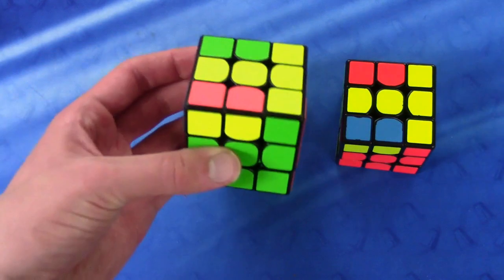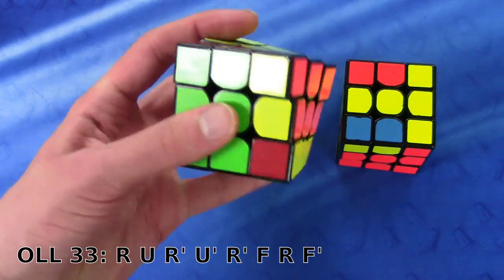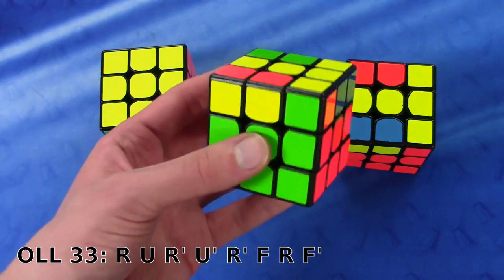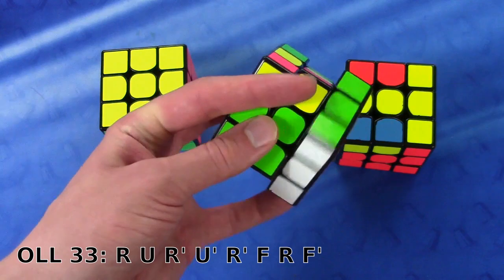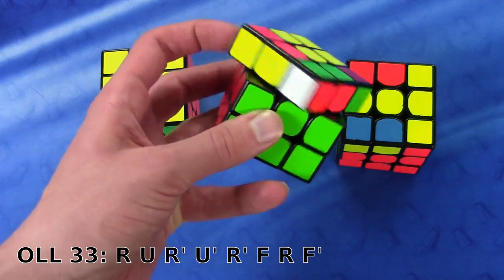Now for a very basic OLL, which is simply sexy move, sledgehammer. For the finger trick, first you start off with a sexy move which is quite standard. So just going to do like this: U from the front with the index, R', U'.